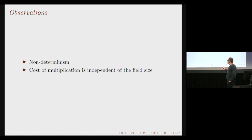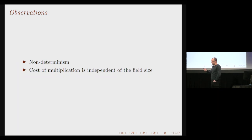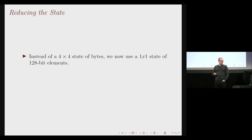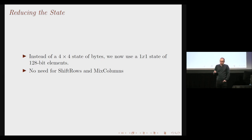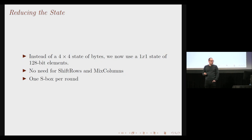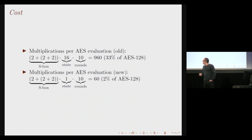Our next observation is that the cost of a multiplication is independent of the field size in our setting. So instead of a four-by-four state, we work with a one-by-one state. This eliminates ShiftRows and MixColumns — those operations mix field elements, and with only one element there's nothing to mix. We can afford one S-box per round, giving a cost of only 60 multiplications — 2% of the original AES-128 cost.